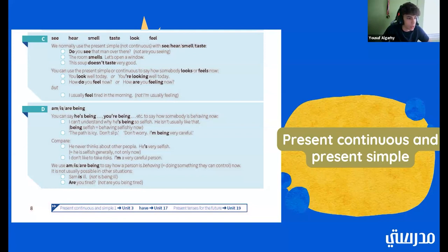So, then we have, am, is, are, being. So, you can say, he's being, or you're being, etc. To say how somebody is behaving. I can't understand why he's being so selfish. He isn't usually like that. So, being selfish means behaving selfishly right now. Now, we have, the path is icy. Don't slip. Don't worry. I'm being very careful. So, being very careful means being careful right now. So, now we have, he never thinks about other people. He's very selfish. Which means he is selfish generally. And, doesn't have to be selfish right now. Or, I don't like to take risks. I'm a very careful person. Now, saying I'm a very careful person means you're careful all the time.